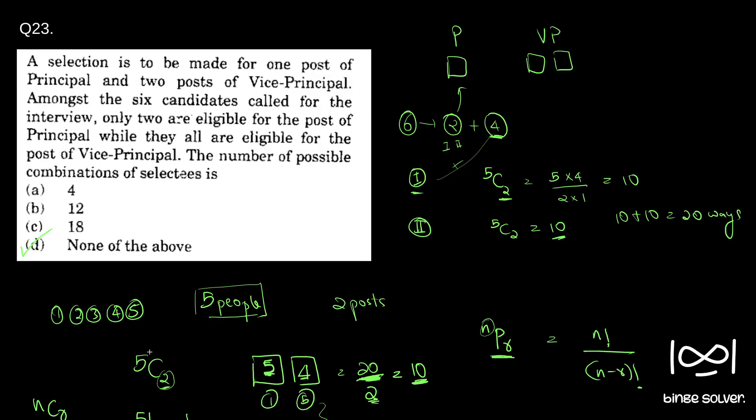Anyway, in this question the solution is D, none of the above. The total number of selections that can be made is 20. It is not in the options, so D. Question 23, D.